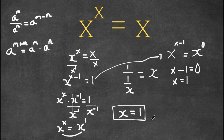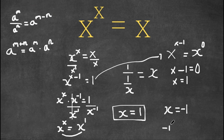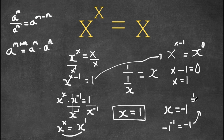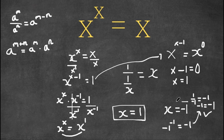However, there is actually another solution to this problem: x equals negative 1. This would also work. Because if we plug this into our equation, negative 1 to the power of negative 1 equals negative 1. Well, negative 1 to the power of negative 1 is simply 1 over negative 1, and 1 over negative 1 is simply just negative 1. So negative 1 equals negative 1 — so this is correct. Therefore x equals negative 1 is also a solution to this equation.